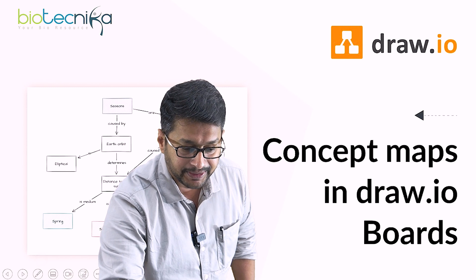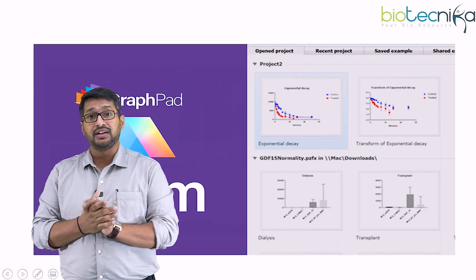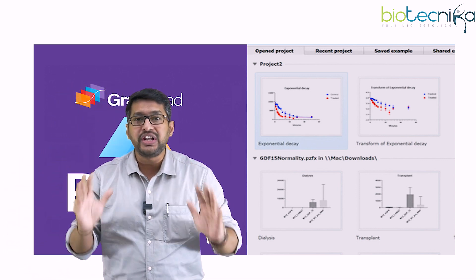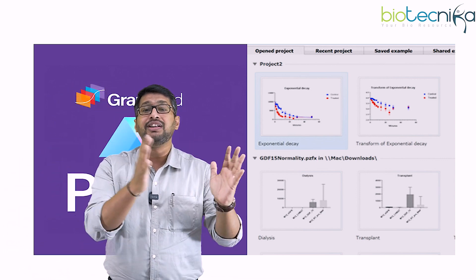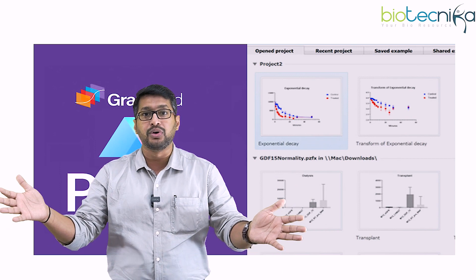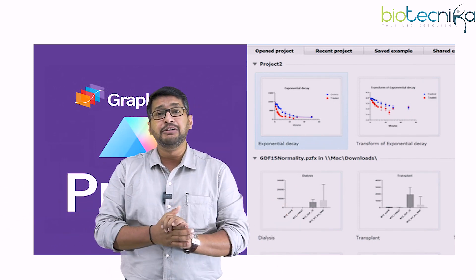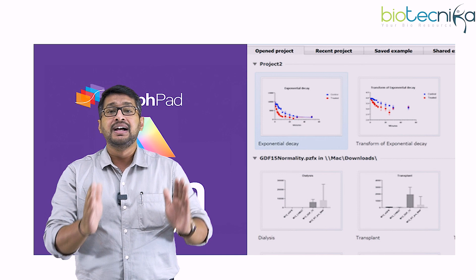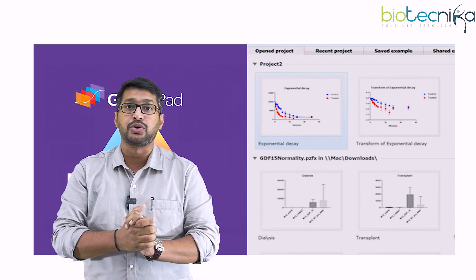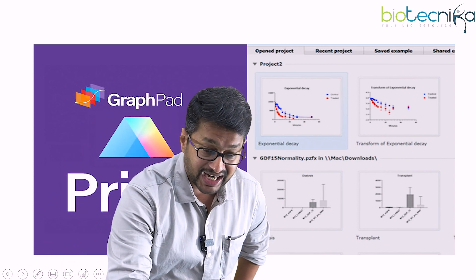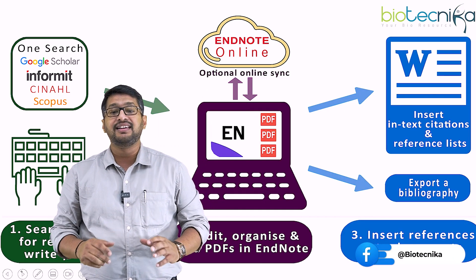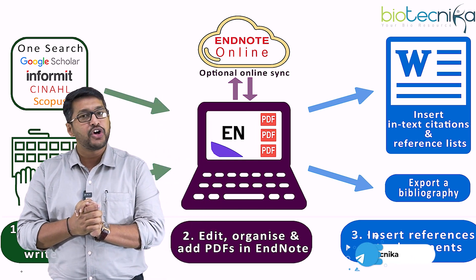The sixth tool is GraphPad Prism. It becomes very important once you finish executing your experiments and need to put your results into graphical form. GraphPad helps you analyze all your data statistically — comparing between groups, within groups, and among groups. It is a strong recommendation for statistical analysis.